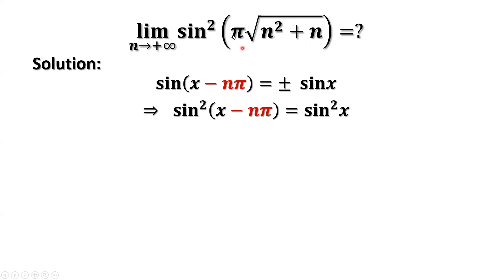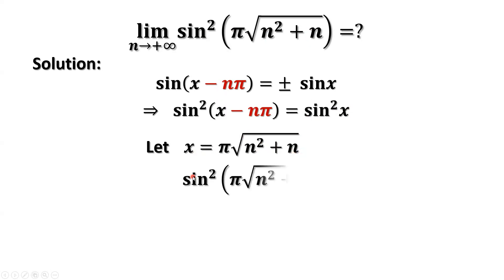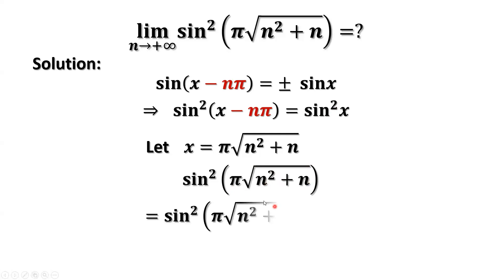How do we use this result for our question? We consider this part as x, meaning x equals pi times square root of n squared plus n. So sine squared of x equals sine squared of pi times square root of n squared plus n, which equals sine squared of x minus n times pi.